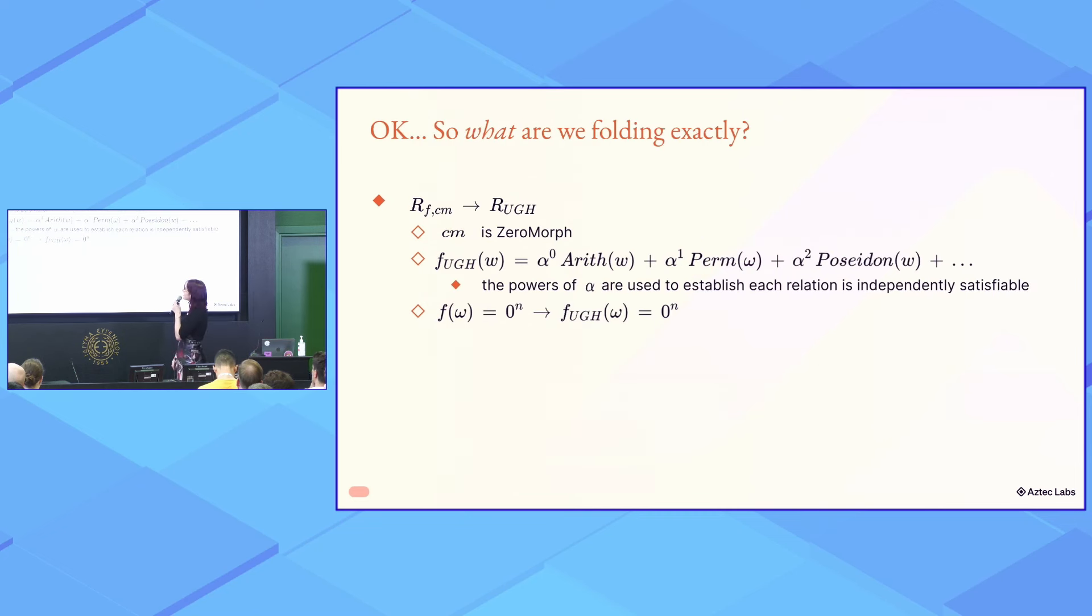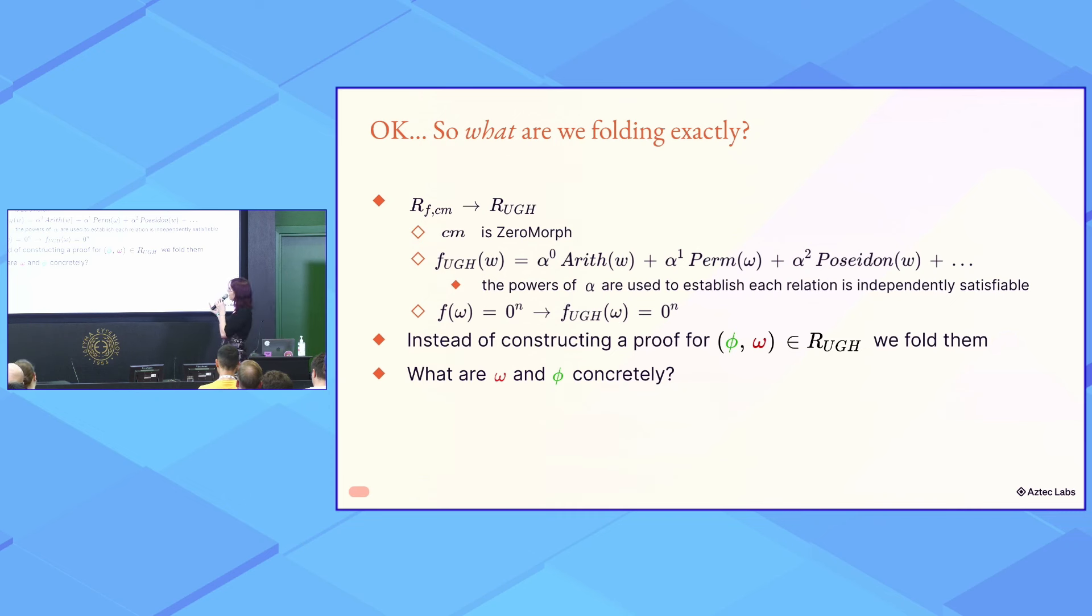So, let's see what we're folding exactly, because we want to actually fold circuits belonging to that were previously in the proof system. So, this R becomes something called an RUGH, where the commitment function is zero morph, and we turn the satisfiability function into what used to be proven by SumCheck, which is an identity with all the possible relations that we would encounter, whose gate we would encounter in circuits, which are batched with powers of an alpha to make sure they're satisfiable independently. And, basically, the aim is for a satisfiable circuit, so you would have this function evaluating to zero. So, instead of constructing proofs for this topple, we fold them.